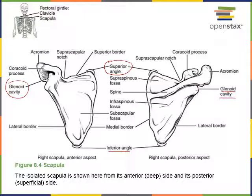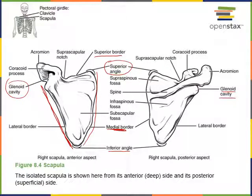The superior border connects between the lateral angle and the superior angle. The lateral border, also known as the axillary border, extends from the lateral angle to the inferior angle. And the medial border, also known as the vertebral border, extends from the inferior angle to the superior angle. So we have a triangular-shaped bone.